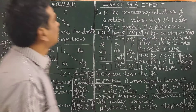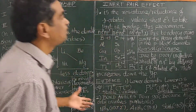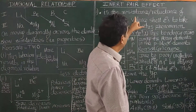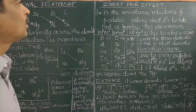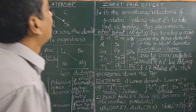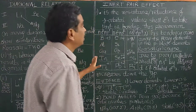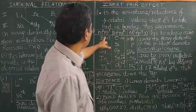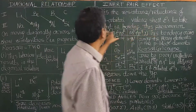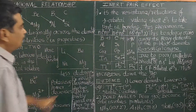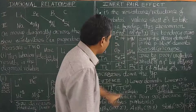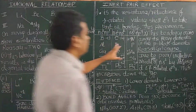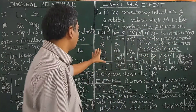Now let us study what is inert pair effect. It is very, very important — it is asked in all competitive examinations. It is defined as the resistance or reluctance of the S orbital paired electrons to take part in bonding. This occurs among the heavy elements in the P-block elements.